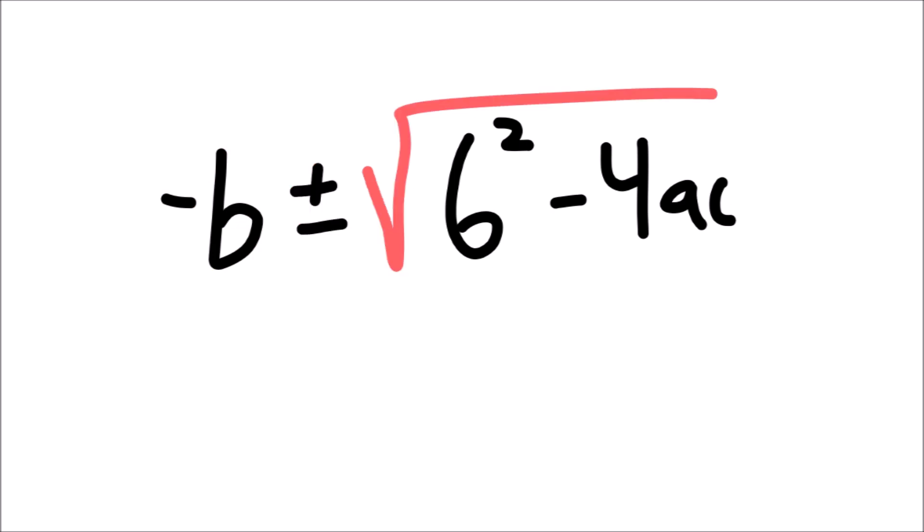Well, it's negative b plus or minus square root of b squared minus 4ac. Did it make sense not to divide by 2a?